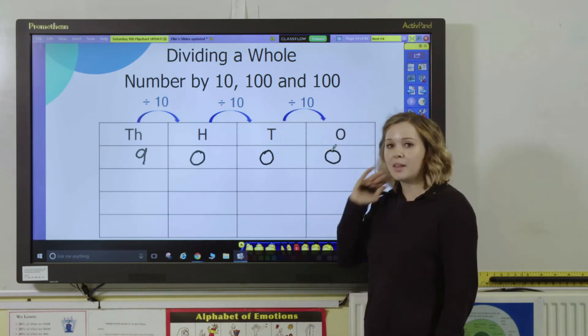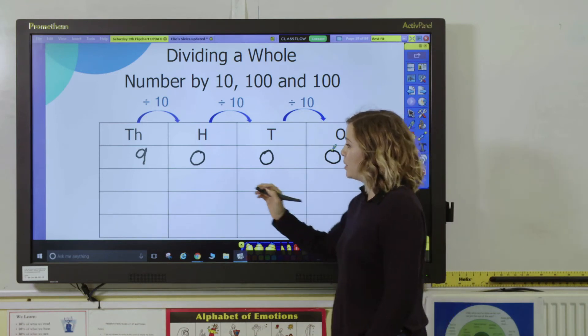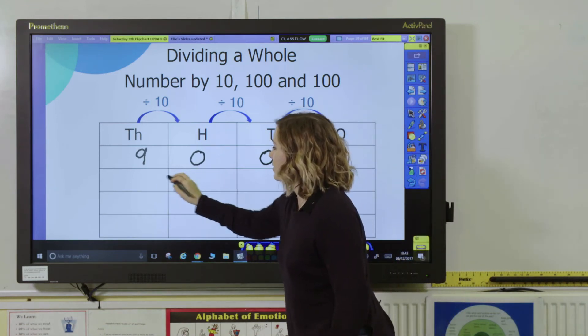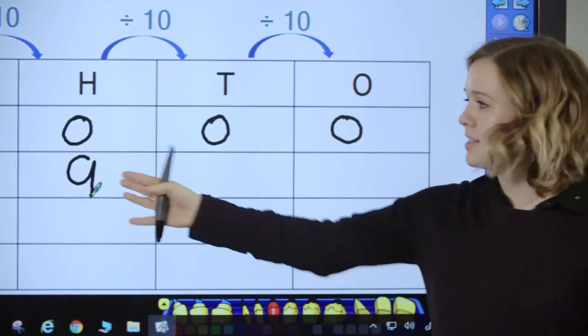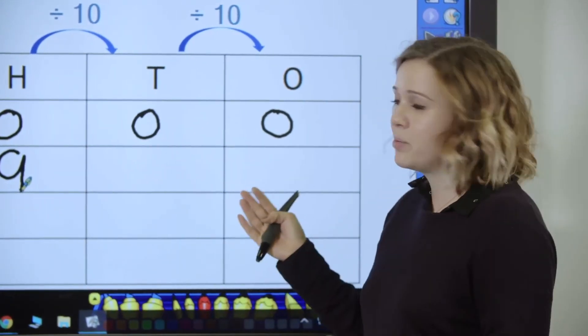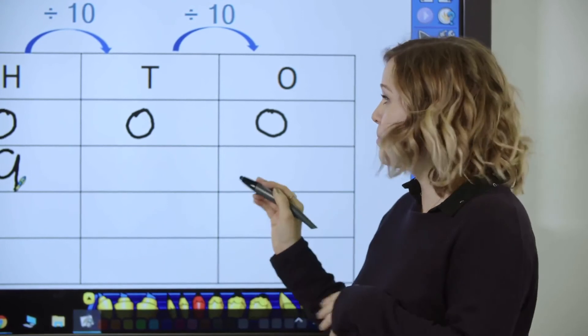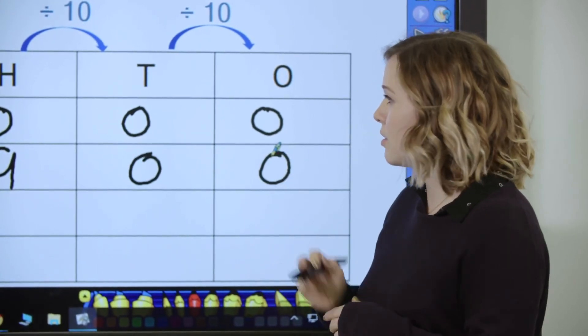So to begin with, if I want to divide my number here by 10, you need your pupils to understand that this is going to move one space to the right. You then might ask them, so is that my number? Is it 9 by itself? What else do I need to do? And hopefully pupils will recognize that they need to put in a zero as a placeholder in the tens and the ones column.